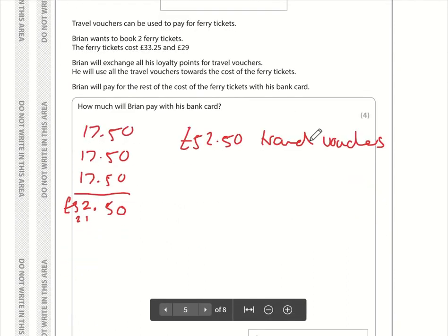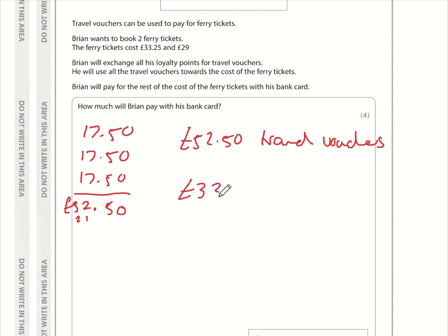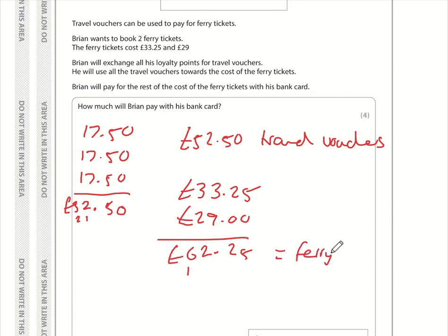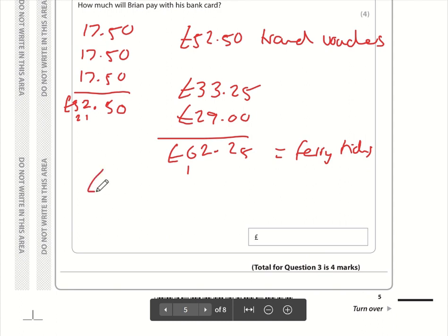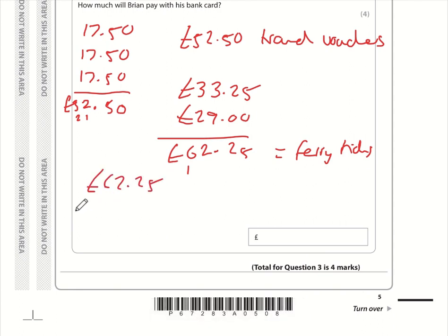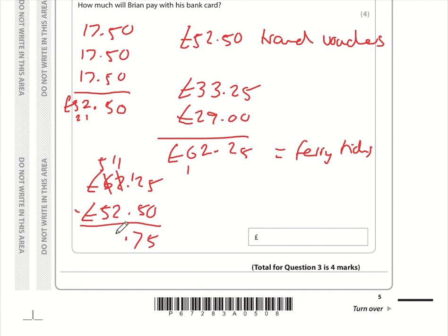Brian buys two ferry tickets costing £33.25 and £29.00. The total is £62.25. He'll have to pay the difference between £62.25 and £52.50. Subtracting: 62.25 minus 52.50. Working through the column subtraction gives £9.75 — that is the difference he needs to pay.